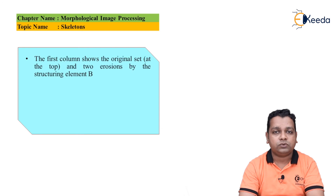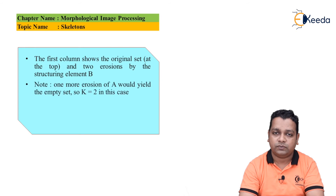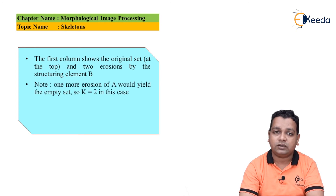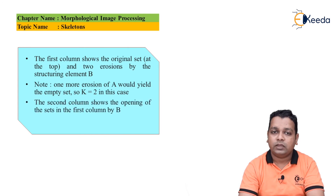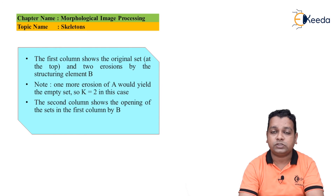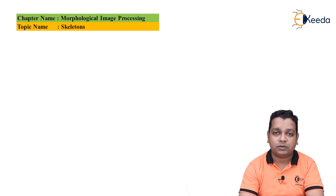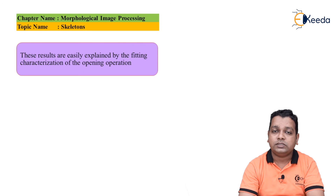The first column shows all original sets at the top and two erosions by structuring element B. One more erosion of A would yield the empty set, so K=2 in this case. The second column shows the opening of the sets in the first column by the same structuring element B. These results are easily explained by the fitting characterization of the opening operation.